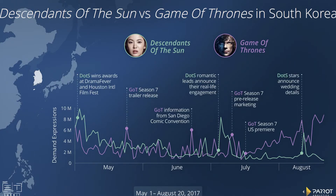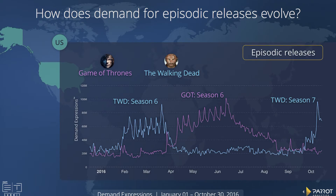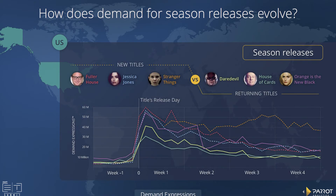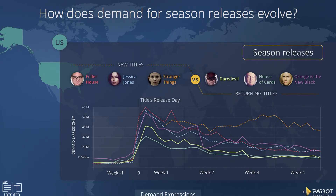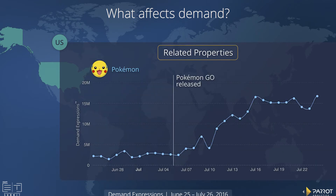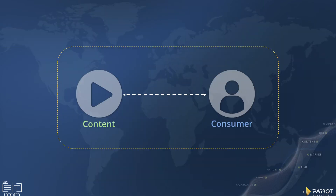Now we can understand over longer periods of time — across all of 2016 — how the episodic patterns of TV shows move. Looking at season releases: these are three new and returning seasons on Netflix in 2016. You can see the day-zero launch binge-watching pattern, demand drops, a second-weekend binge when people finish watching the season, and then a decline. We can now understand why Netflix needs to invest in so many original series to keep these demand spikes up averaged across the entire year. We can also measure the impact of winning an Emmy Award on a TV show's popularity, and how the release of an app impacts the demand for a TV show of a related property.